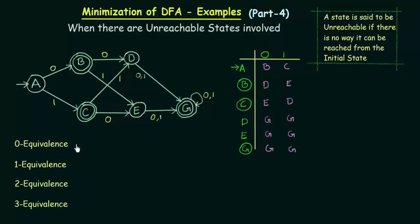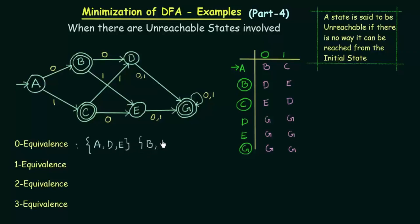Starting with the zero equivalence — how do we write the zero equivalence? We put the final states and non-final states in separate sets. Here, the non-final states are A, D, and E, and the final states are B, C, and G. That is how we write the zero equivalence.